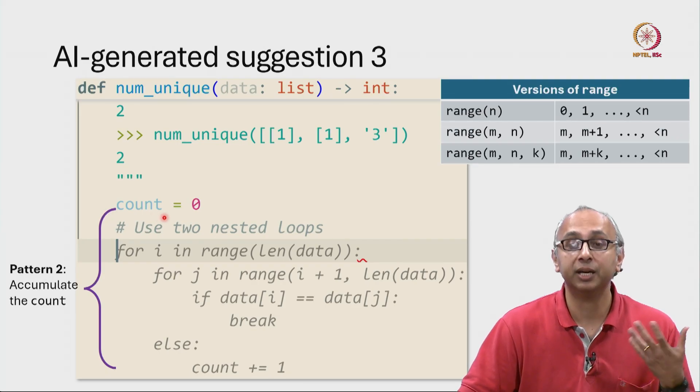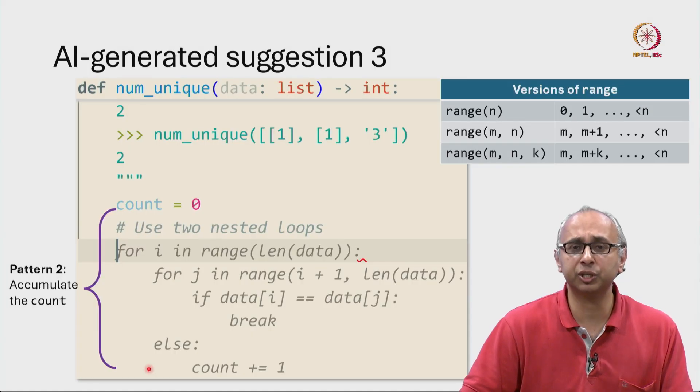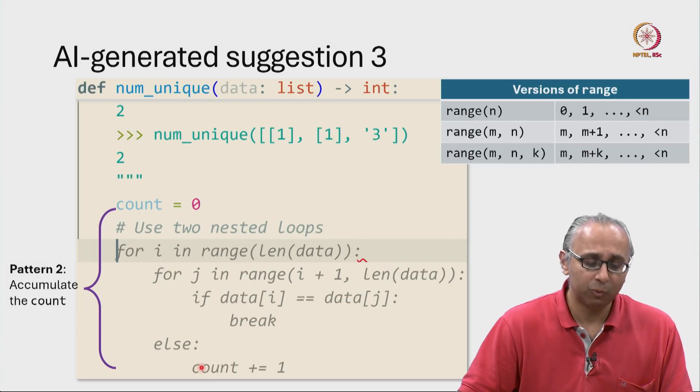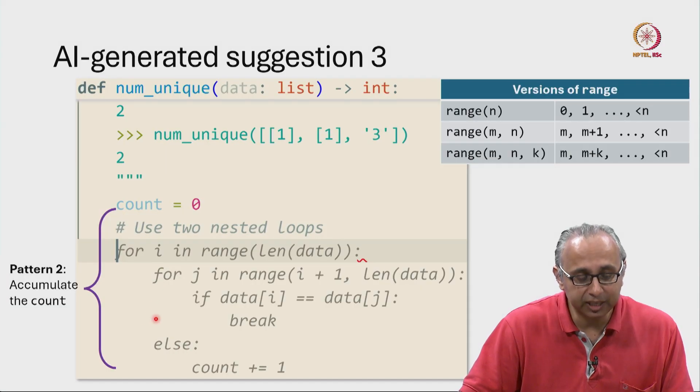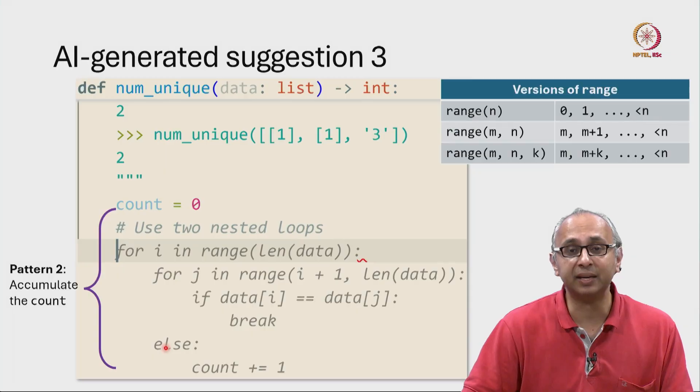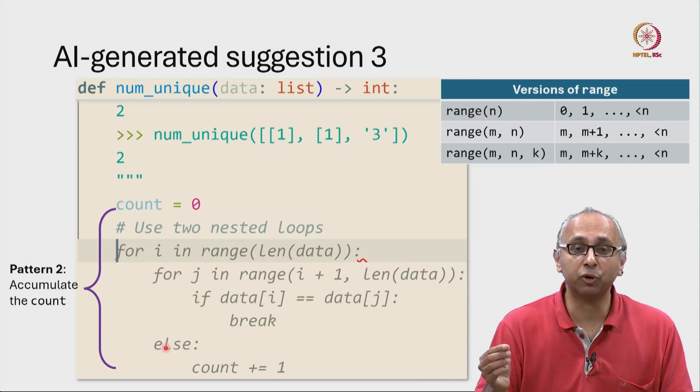We are initializing a count equal to 0. This is the variable that will accumulate our answer. And then if some condition is true, we will increase that count by 1. Now how exactly do we get to this statement? Well, that is in the else statement associated with the inner for loop. So let us try and see if we can understand what the inner for loop is doing.